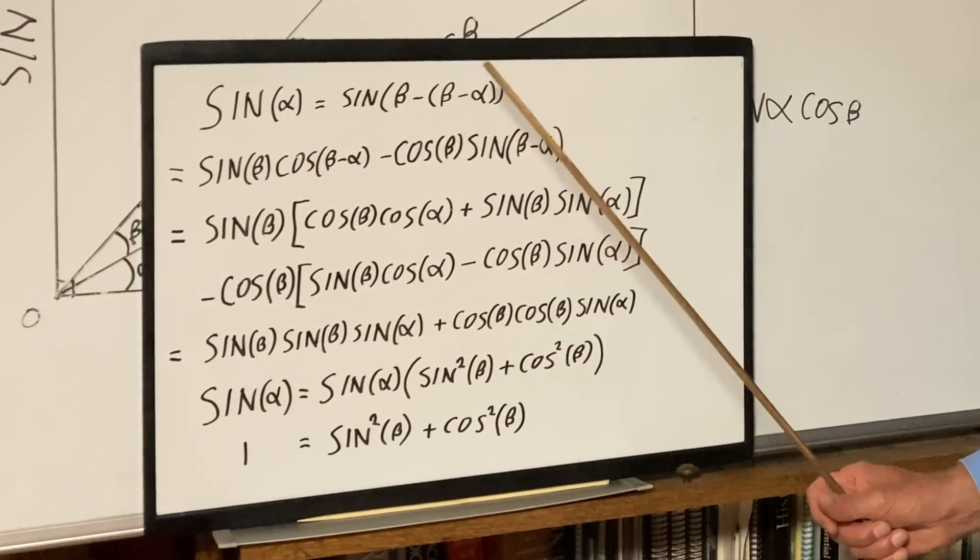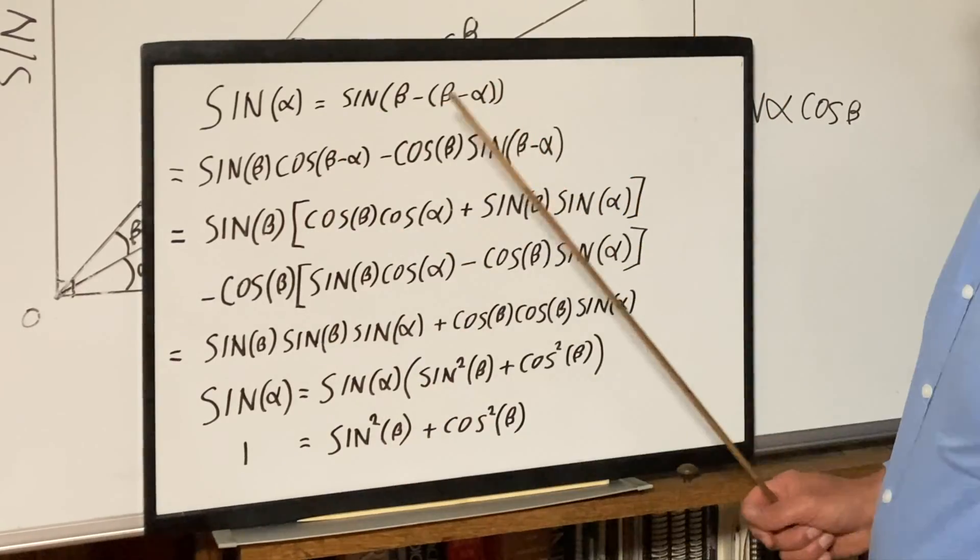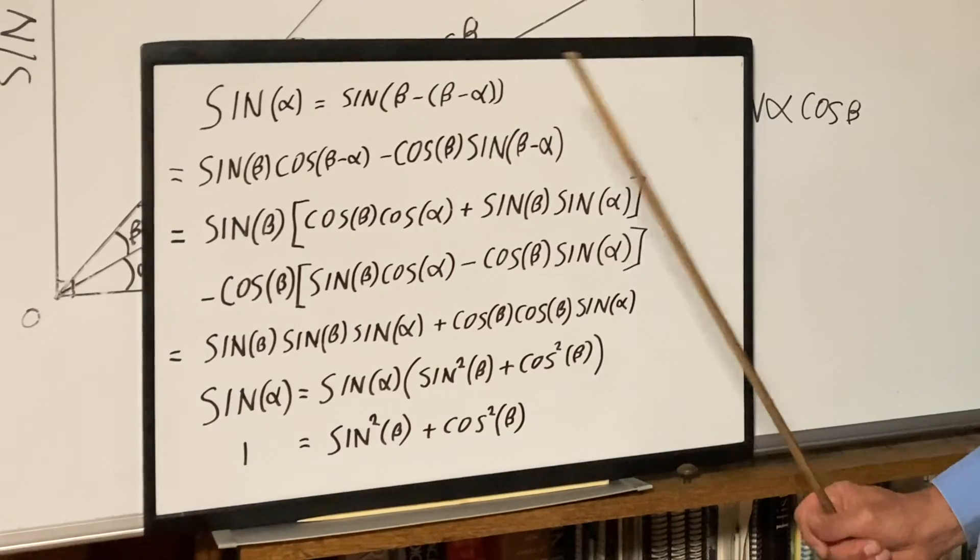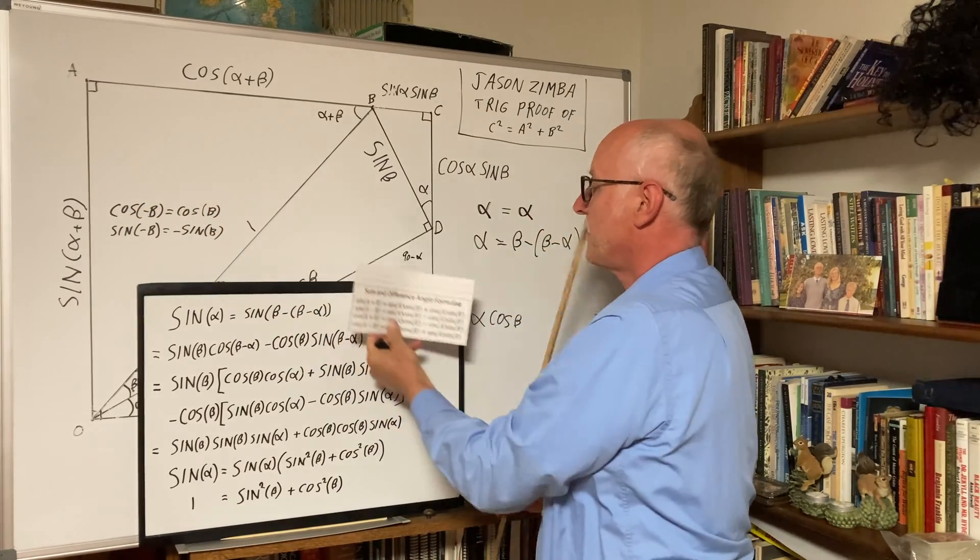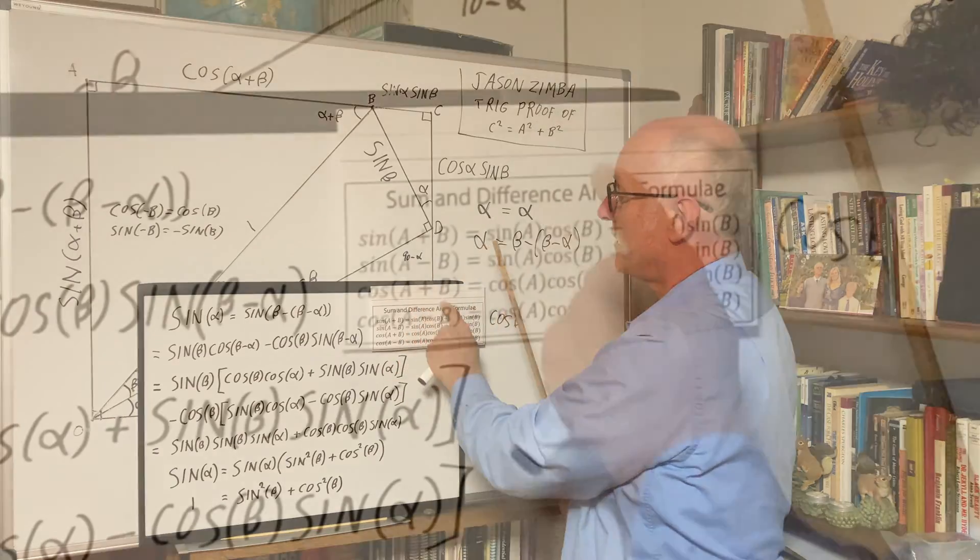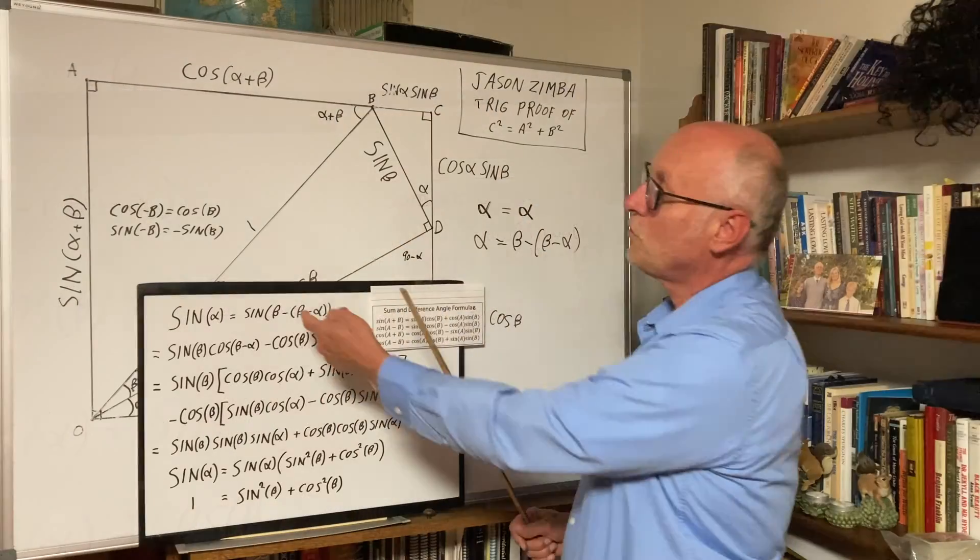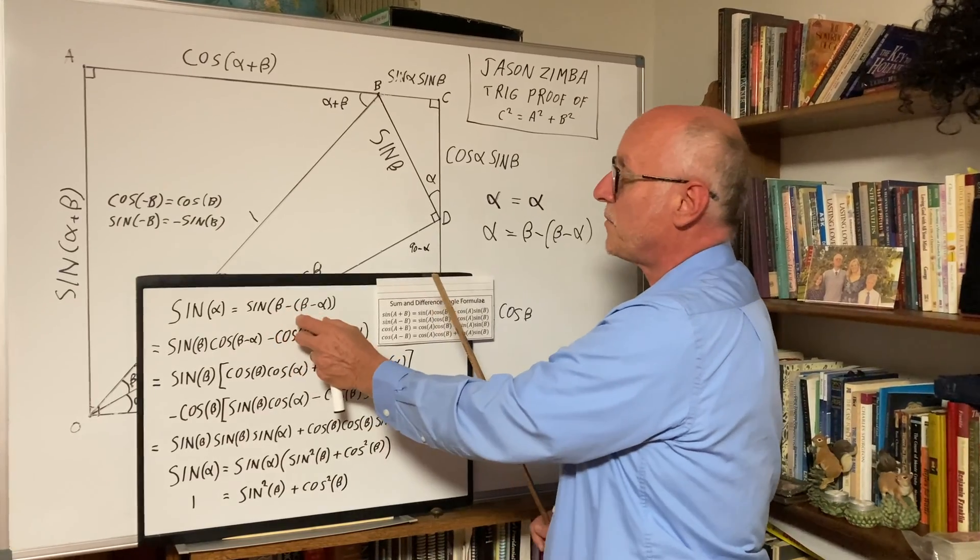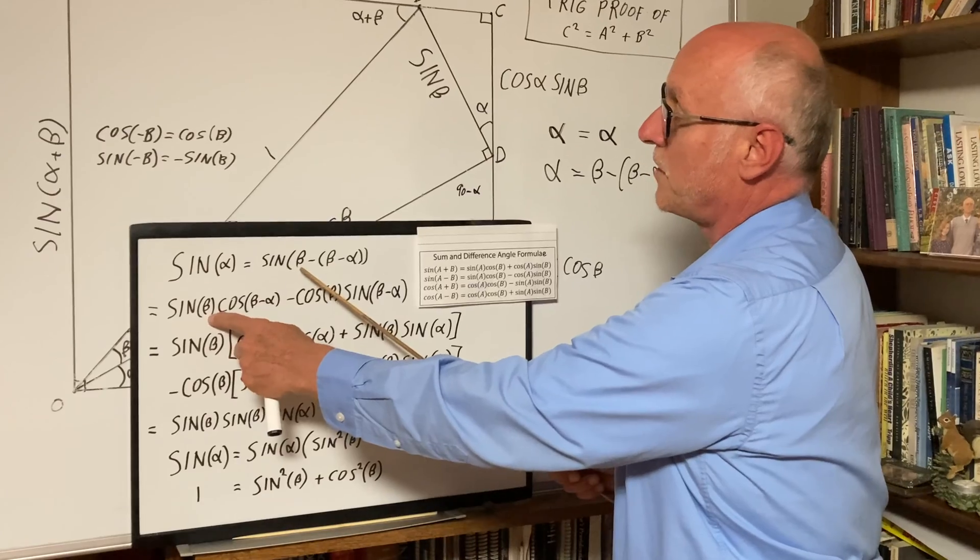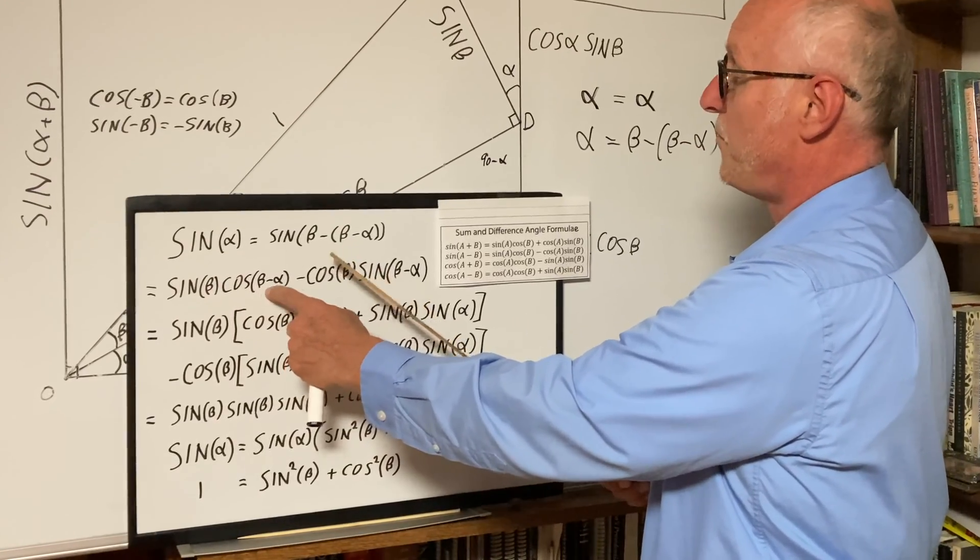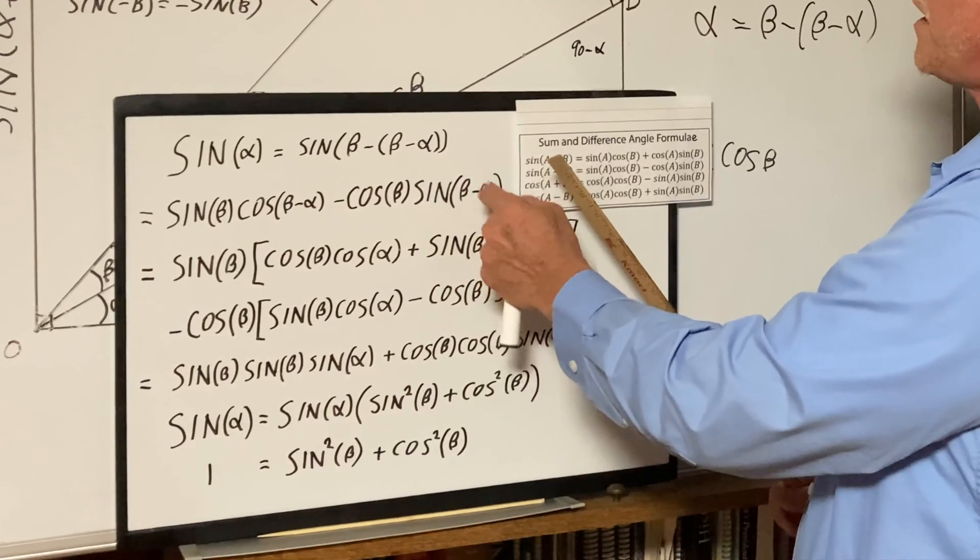The requirement is that alpha and beta must be in units of angle, let's say degrees. So we are using the sine difference angle formula, sine A minus B equals sine A cosine B minus cosine A sine B. Beta is the first part, and then beta minus alpha is the second part. So we expand that, and so sine of beta, cosine of beta minus alpha, minus cosine beta, sine of beta minus alpha.